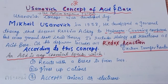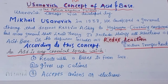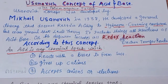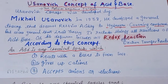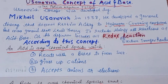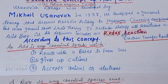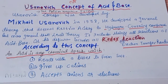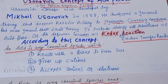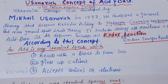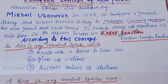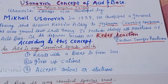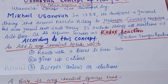This concept is also known as the positive-negative system. In 1938, Usanovich developed a general theory that does not restrict acidity to only hydrogen-containing compounds. According to the Arrhenius concept, acids give H+ ions. This theory is more general than the Lewis theory — Lewis acids are lone pair acceptors and Lewis bases are lone pair donors. This theory includes all reactions of acids and bases, including redox reactions and electron transfer reactions.